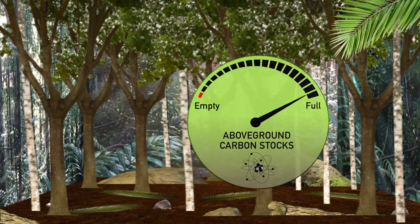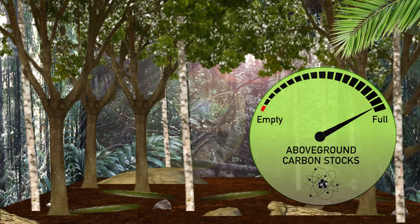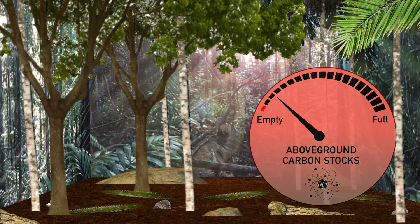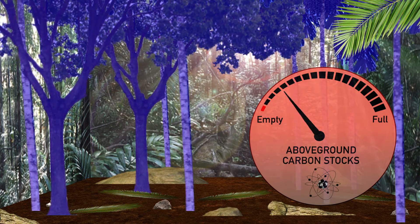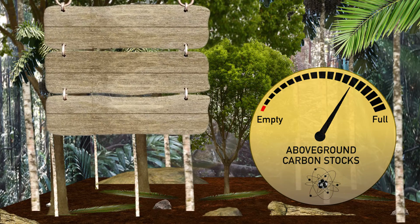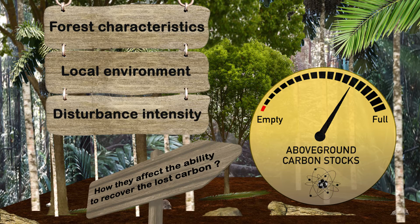The main disturbance of Amazonian forests is the selective logging of a few merchantable tree species, which results in the loss of above-ground carbon stocks. This can be compensated via enhanced growth of survivors and recruited trees. However, it is not clear how differences in forest characteristics, local environment, and disturbance intensity affect the forest ecosystem's ability to recover the lost carbon.